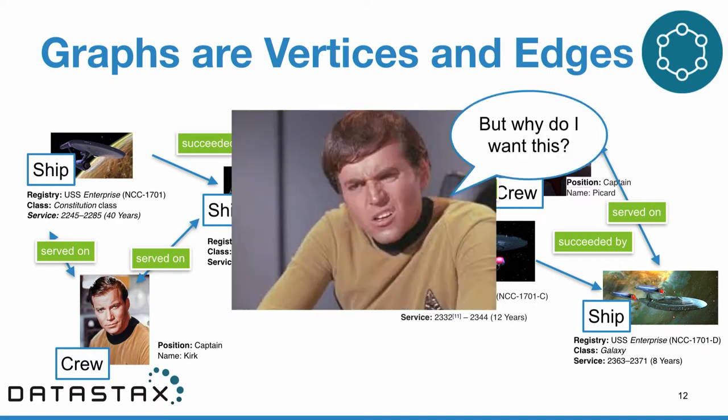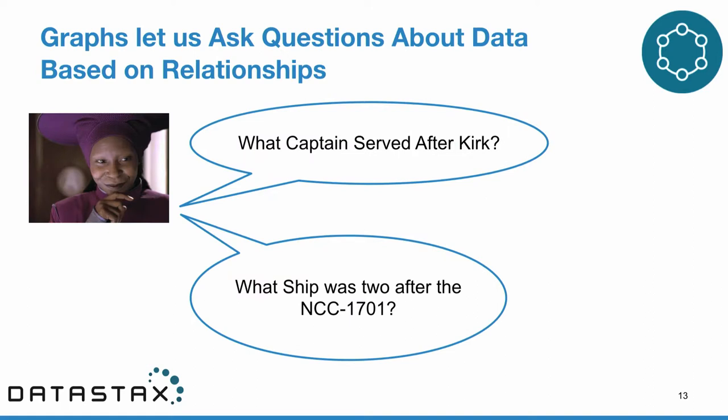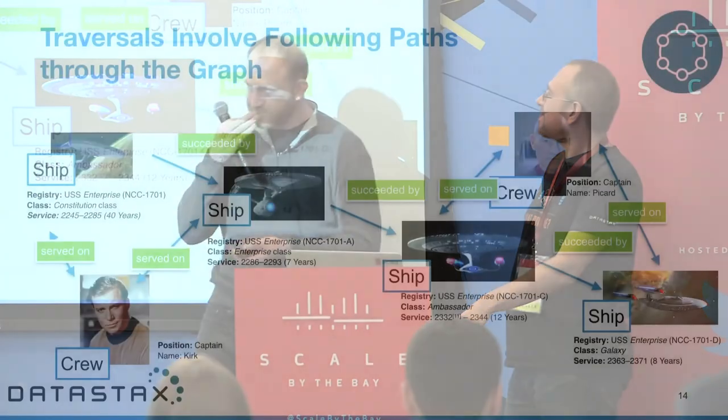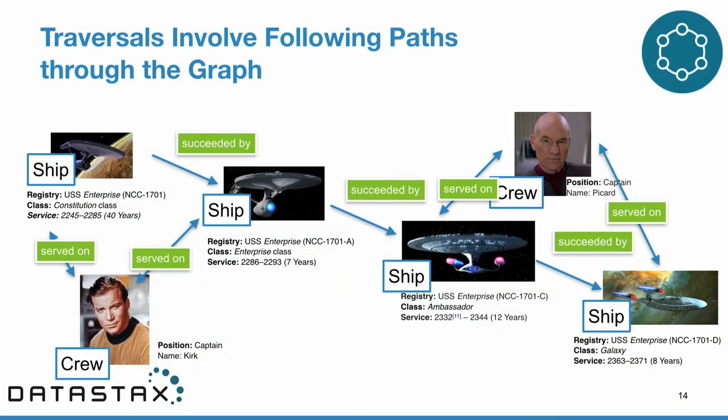Why is this exciting? Obviously this looks like a lot of lines and mixing of things together, but the questions we can ask of a graph are a little different than what we can ask of relational data. For example, asking 'what captain served after Kirk?' or 'what ship was two after the first Enterprise?' is a lot easier to ask of graph data. In the relational world we'd have to do lots of joins across normalized tables, but graphs let us express these requests more simply.